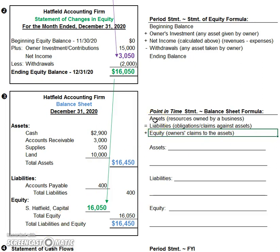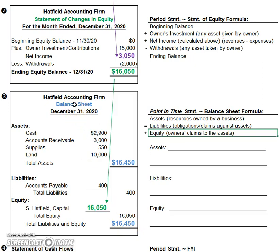The balance sheet formula is: assets always have to equal the total liabilities plus the equity added together. In this example, we can see that the total assets of the business are $16,450. And this equals the total liabilities of $400 plus the total equity of $16,050, so the total liabilities and equity is also $16,450. That is where the balance sheet got its name — from the formula. It always has to balance. Another name for the balance sheet is the statement of financial position.